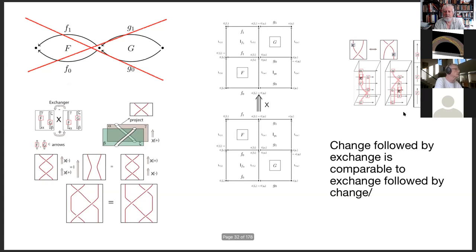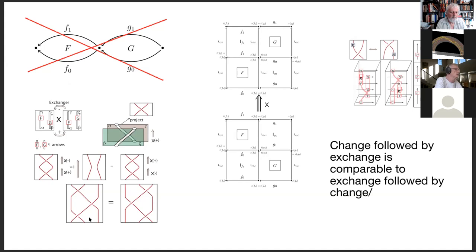The other axiom about the exchanger is that it should be strongly invertible: if you go exchange and then exchange back, that's the same thing as doing nothing. So doing followed by undoing is the same as not doing — that's an expression of the Reidemeister type two move. Exchange followed by change is the same thing as change followed by exchange, where the exchange is between two strings and the change is another exchange.